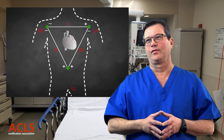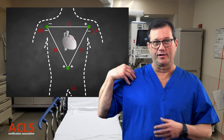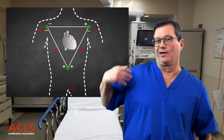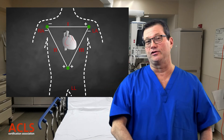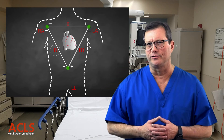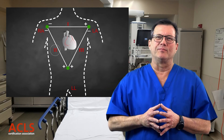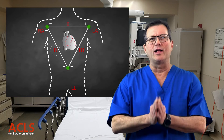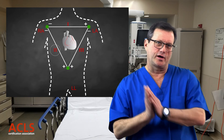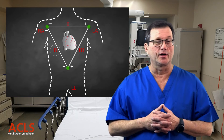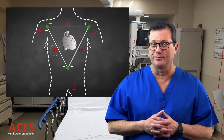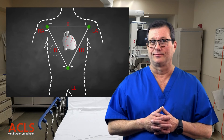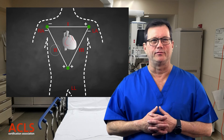Important to note that right shoulder negative, left foot positive — that's lead two on your ECG tracing. That's why we use lead two, because it most accurately follows the natural conduction pathway of the electricity through the heart. Now, it's only one view, a very small view, but it's a pretty good view.